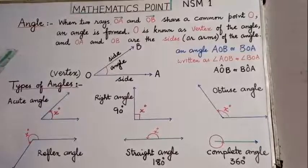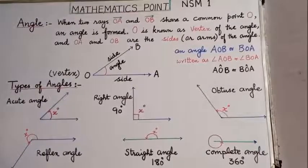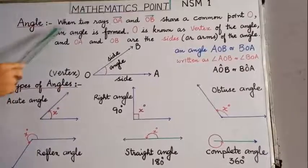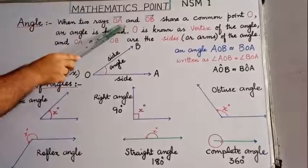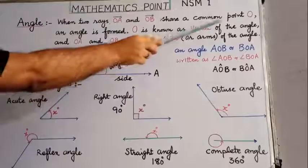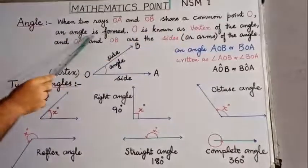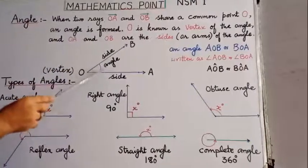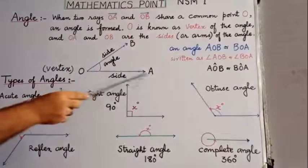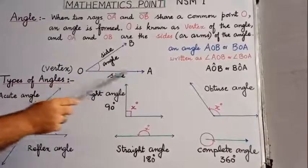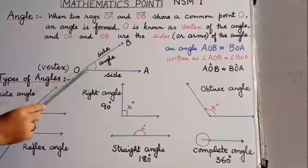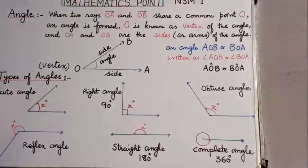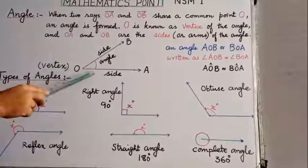In the previous video you have learned about the different definitions of line, line segment, and rays. So how is an angle formed? When two rays — ray OA and ray OB — share a common point O, an angle is formed.